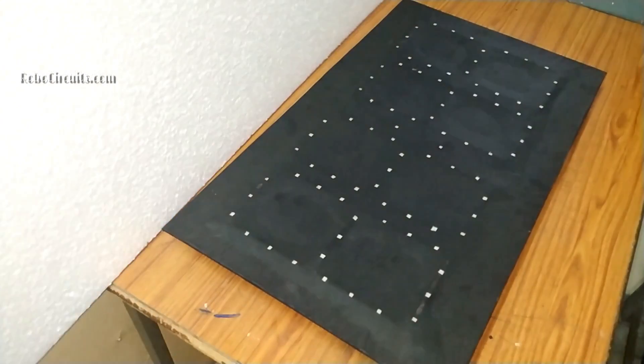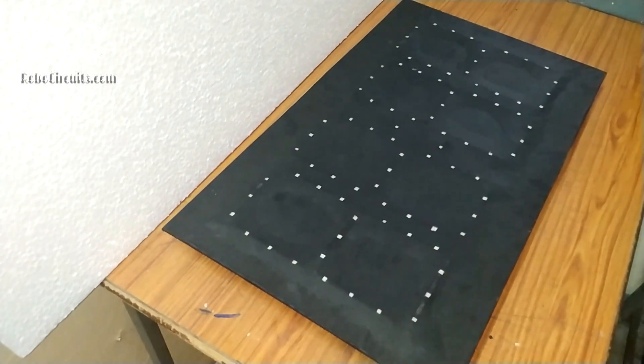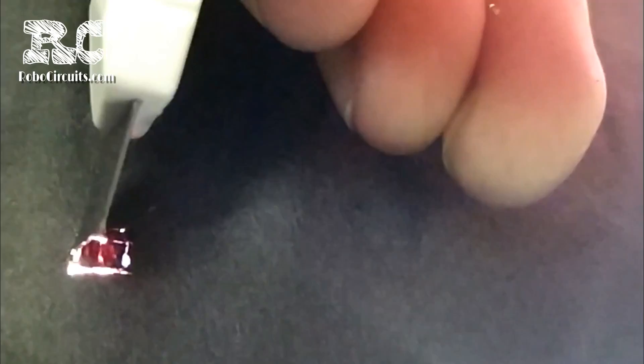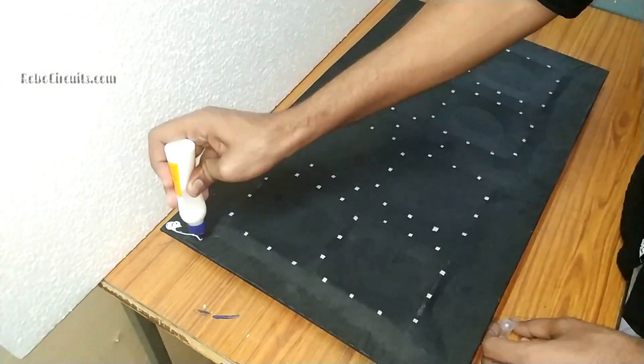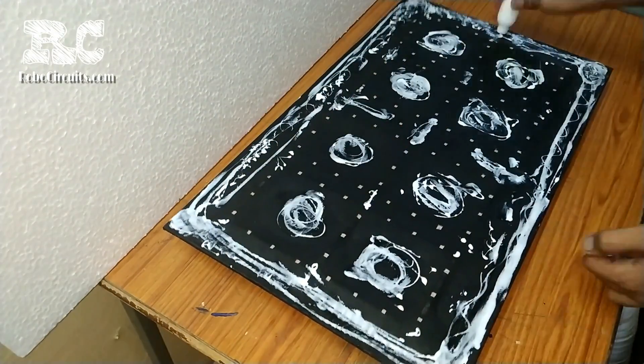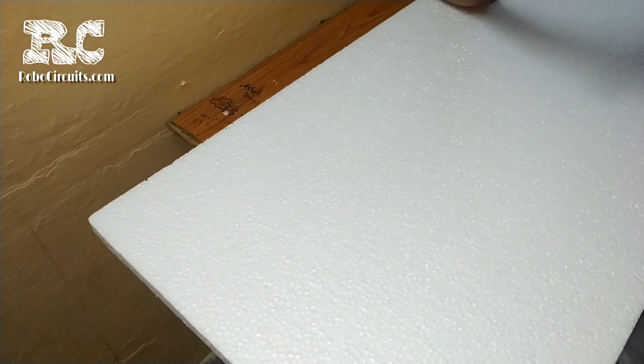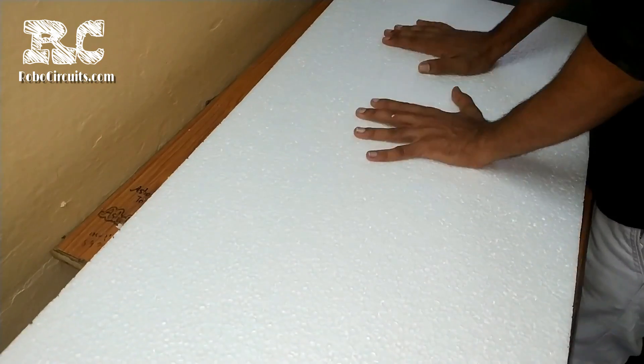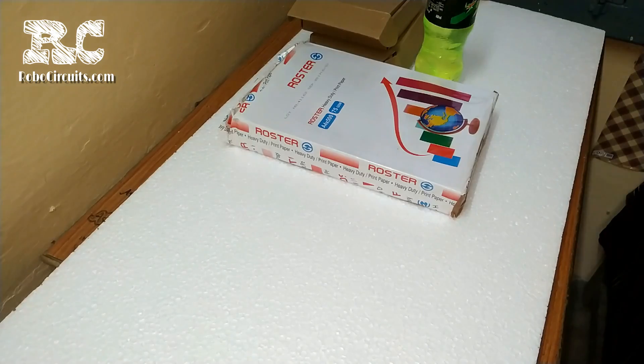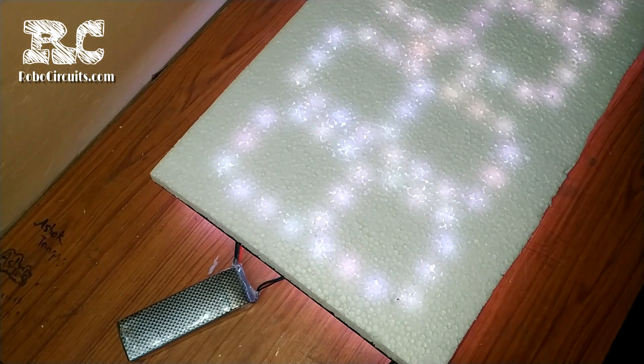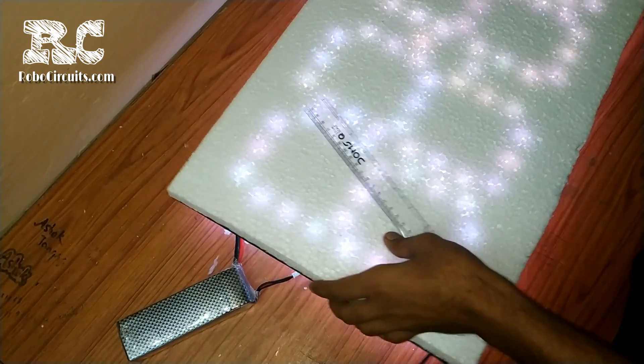Then I covered the front side of the board with a black chart paper so its connection remains safe for later work, and cut the chart using a cutter from above each LED. Then I poured a lot of glue on the board and placed a thermocol sheet on it and put a lot of weight on it. After it gets dry I cut the excess thermocol sheet and applied power supply to it.